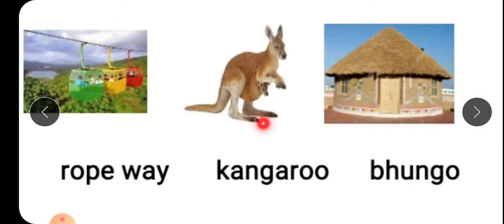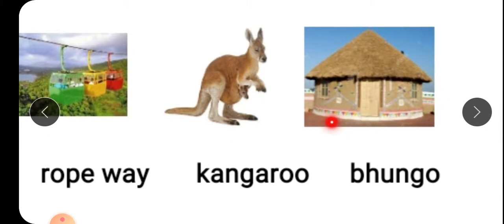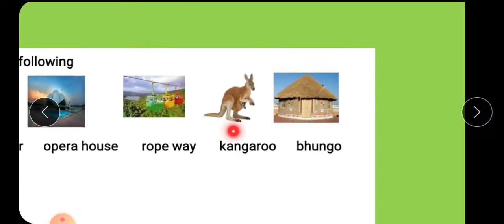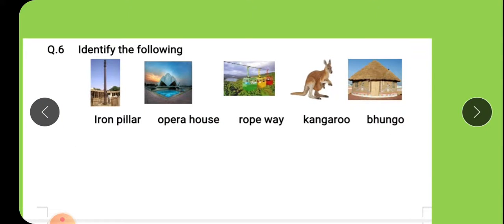Now what you can see in this picture? A kind of hut and this kind of hut are found in Kutch and this type of houses are called bhungo. Kutch ke language mein is ghar ko hum kehte hain bhungo. So in the first line you got iron pillar, opera house, rope way, kangaroo, bhungo.